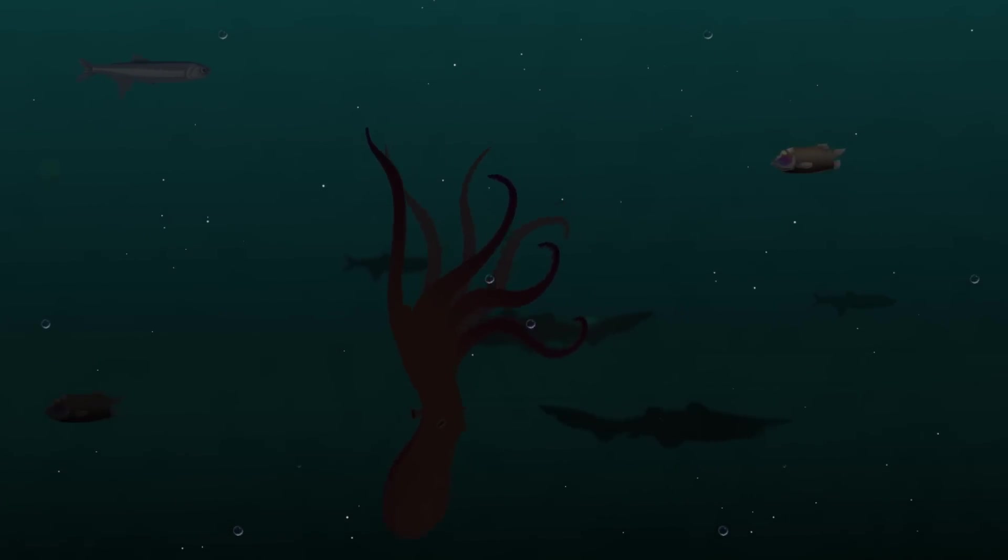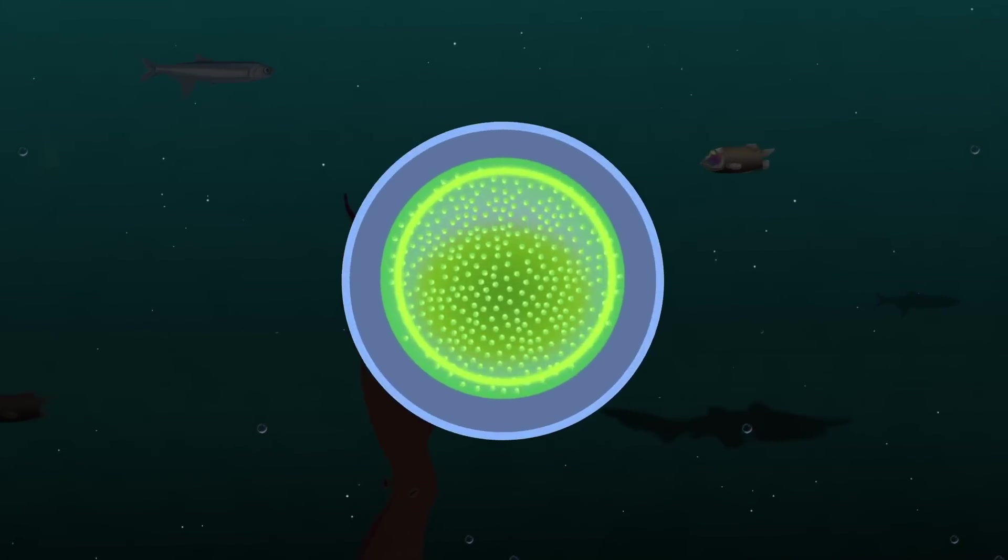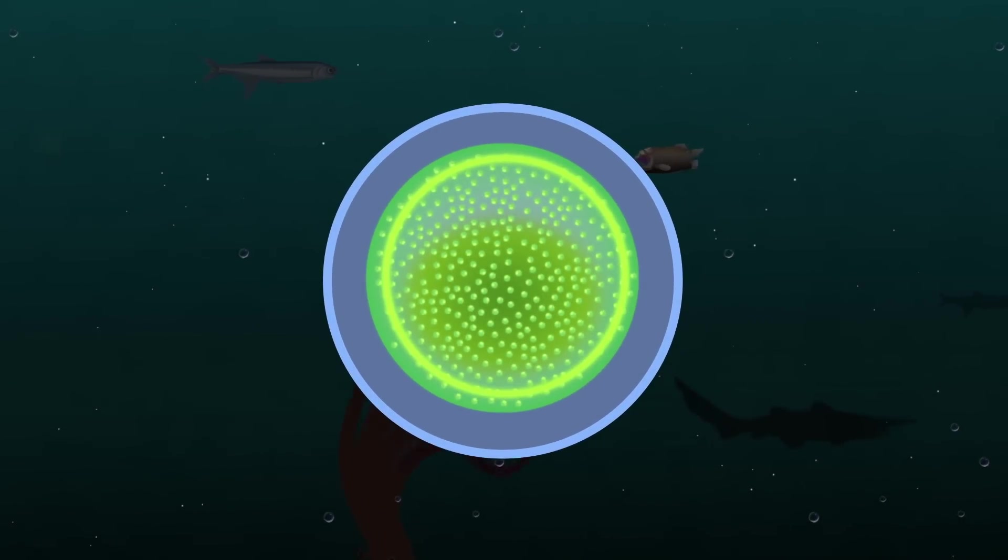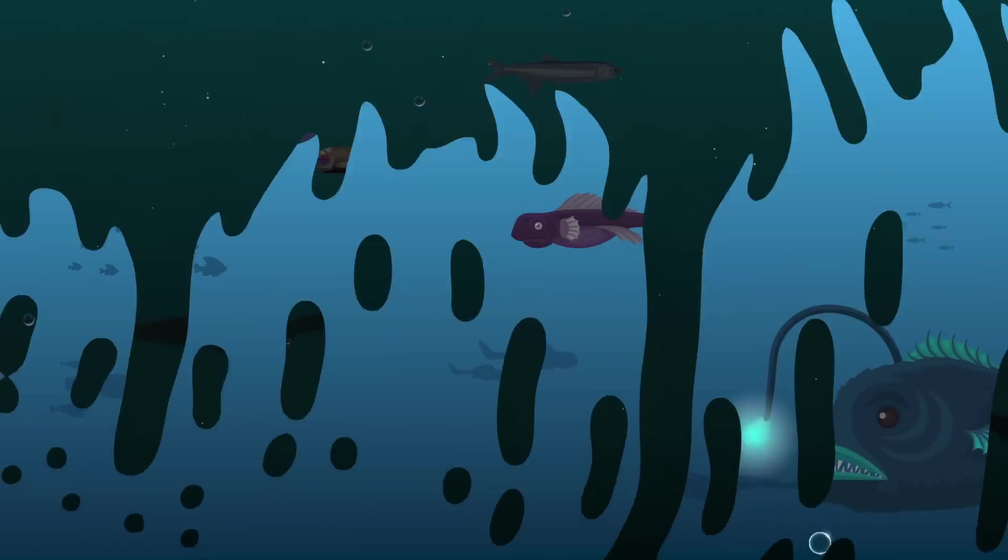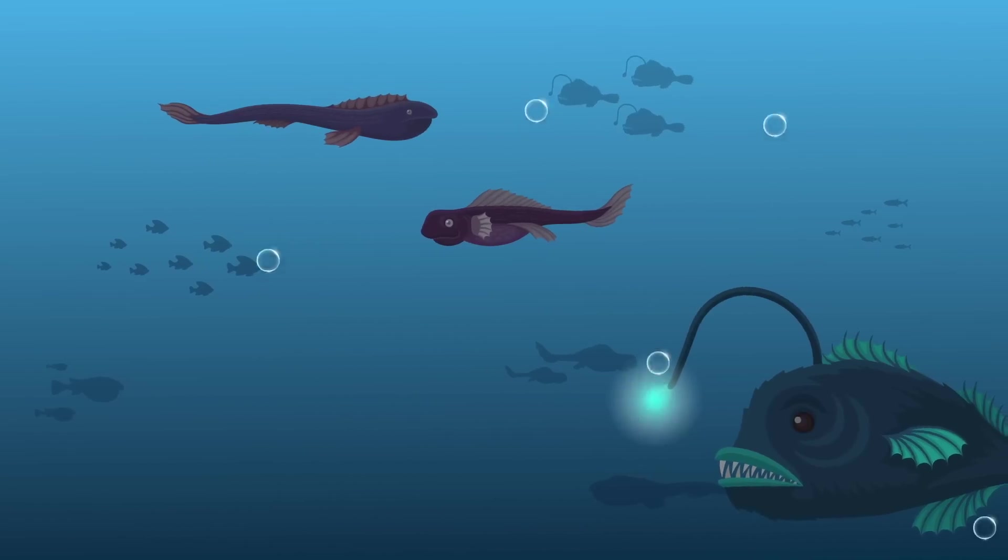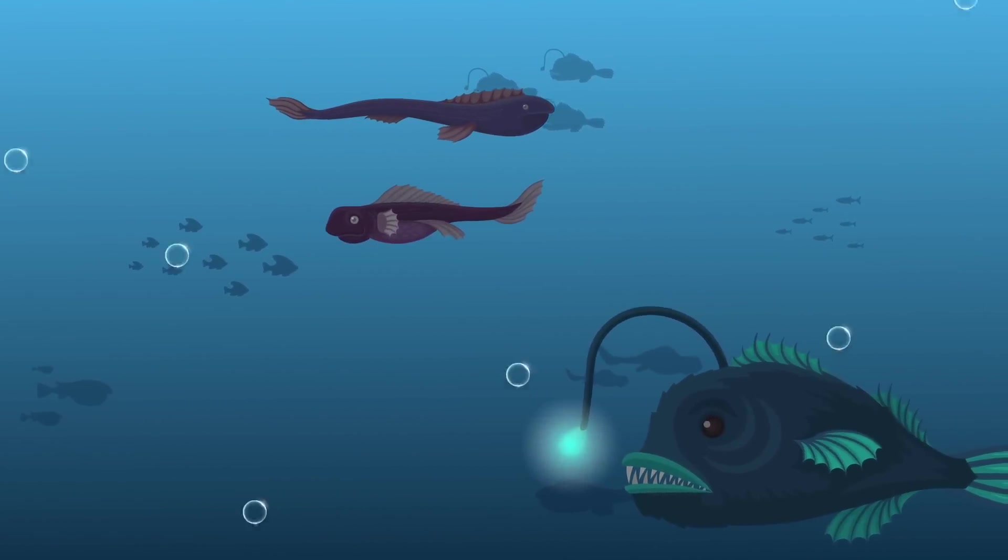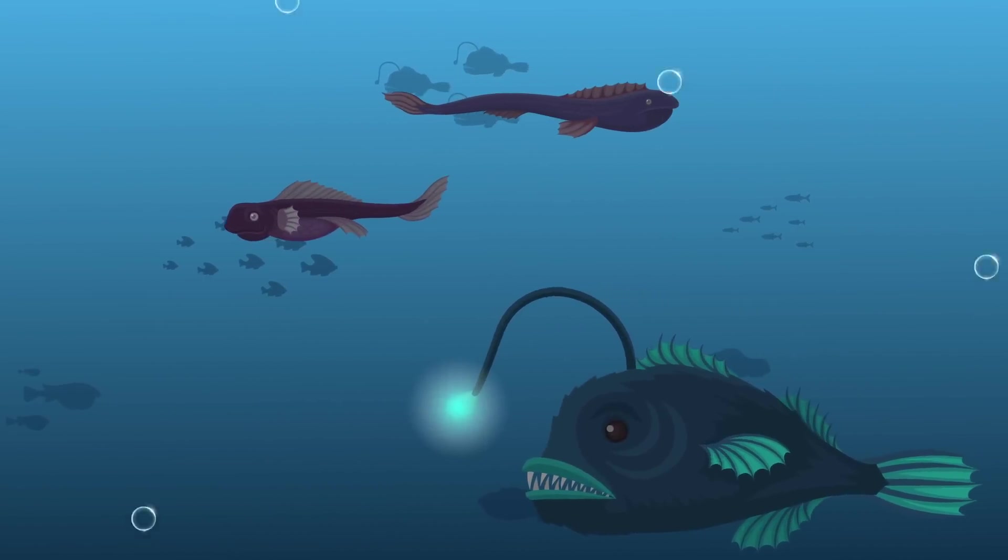While photosynthetic organisms like phytoplankton cannot grow in the midnight zone, this competitive habitat still contains incredible diversity, home to creatures that defy our expectations and, sometimes, make our skin crawl. In the midnight zone, predators specialize in hunting in absolute darkness, so many rely on niche strategies to secure food.